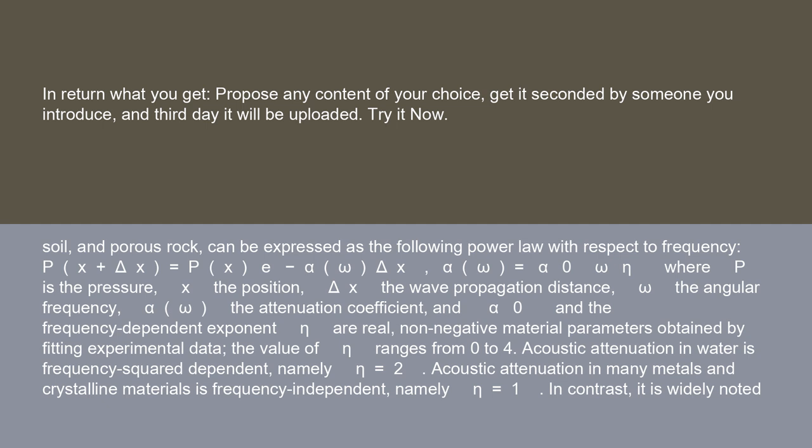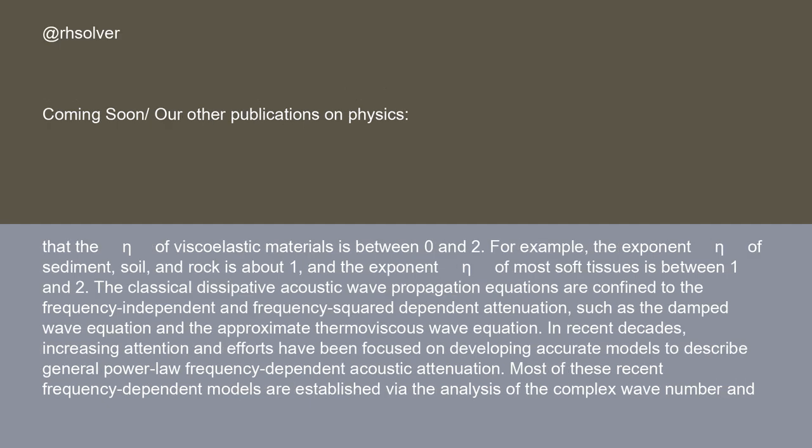Acoustic attenuation in water is frequency-squared dependent, namely η equals two. Acoustic attenuation in many metals and crystalline materials is frequency-independent, namely η equals one. In contrast, the η of viscoelastic materials is between zero and two. For example, the exponent η of sediment, soil, and rock is about one, and the exponent η of most soft tissues is between one and two.